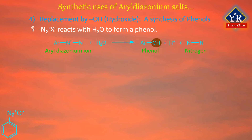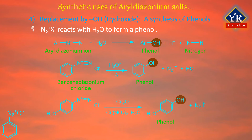Replacement by hydroxide: an important reaction of aryl diazonium salts is their conversion to phenols by hydrolysis. A diazonium salt reacts with water to form a phenol, with the diazonium group replaced by a hydroxyl group. A better yield is obtained by adding aqueous copper oxide and copper nitrate to the cold solution. This is the most general method for preparing phenols and is a useful laboratory synthesis because it does not require strong electron-withdrawing substituents, powerful bases, or nucleophiles.